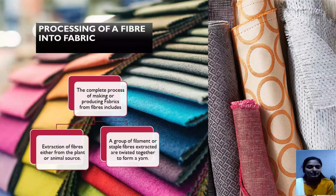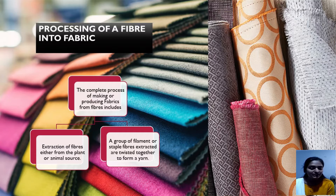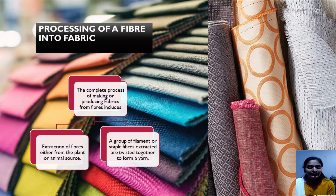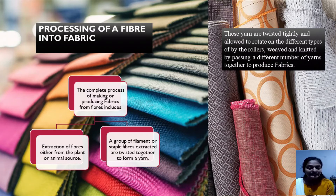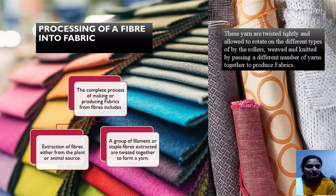Now we will discuss how fibers convert into fabric. The complete process of making or producing fabrics from fiber includes: first, extraction of fibers either from a plant or from an animal source. Then a group of filament or staple fibers are extracted and twisted together to form a yarn. Then these yarns are twisted tightly and allowed to rotate on different types of rollers, and then weaved or knitted by passing different numbers of yarns together to produce fabrics.